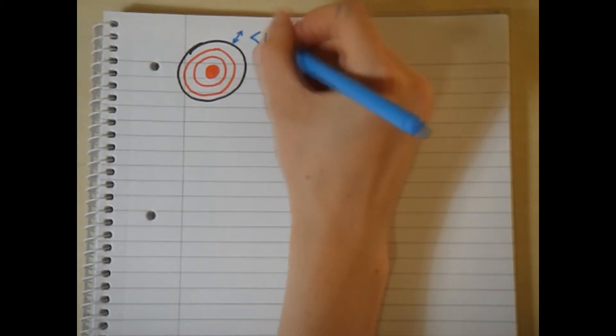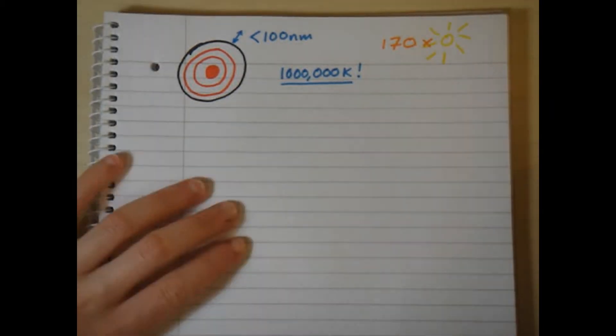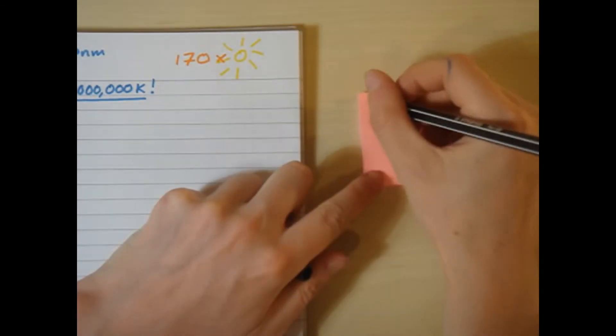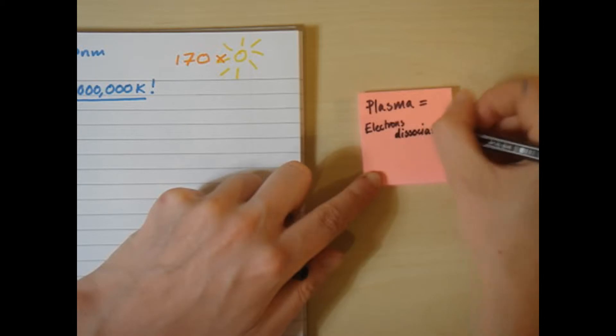At the target, the pulse superheats the surface to around 1 million degrees, but to a depth of less than 100 nanometers. This is around 170 times hotter than the surface of the Sun, and reaches plasma state. Pressure causes the plasma to expand hydrodynamically, as in a violent explosion.